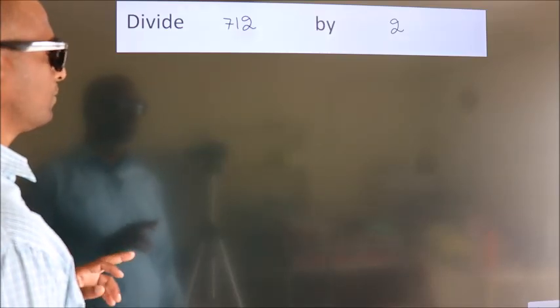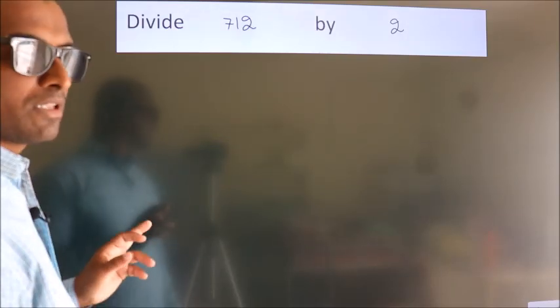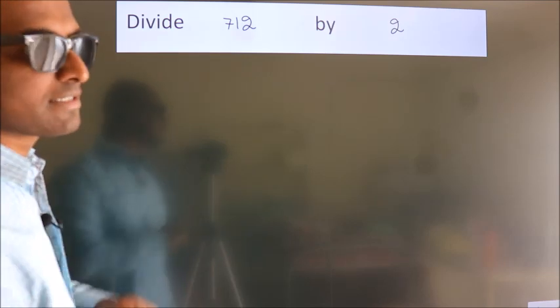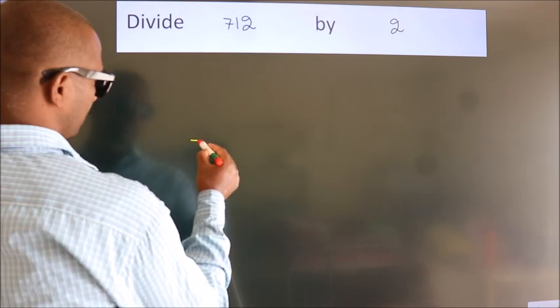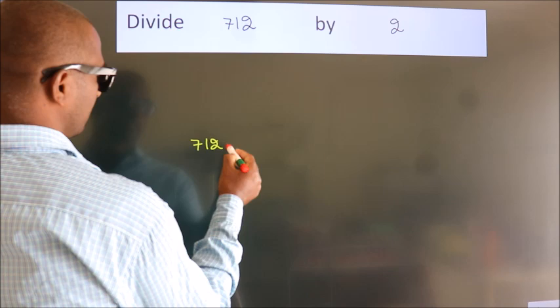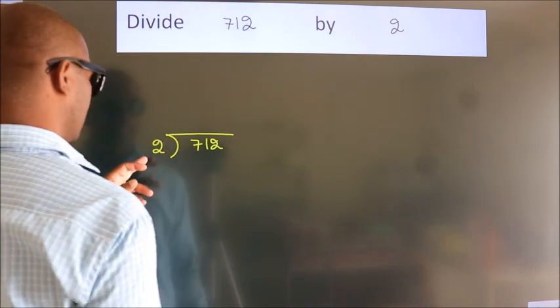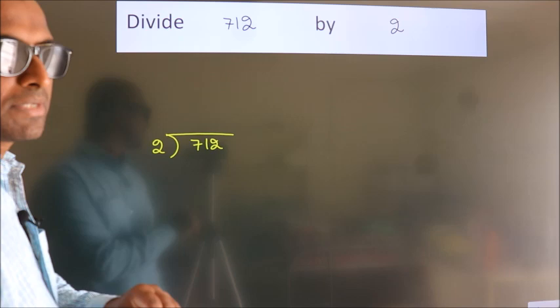Divide 712 by 2. To do this division, we should frame it in this way. 712 here, 2 here. This is your step 1.